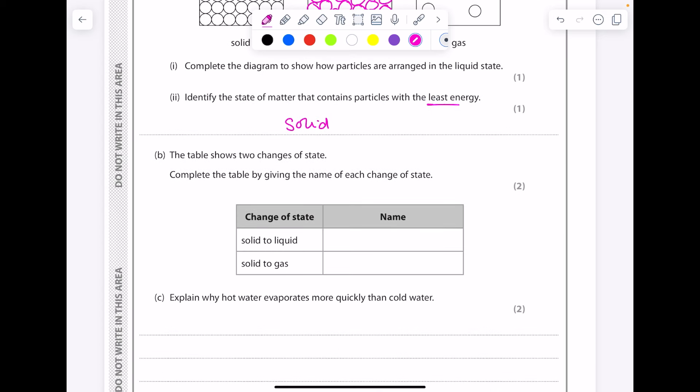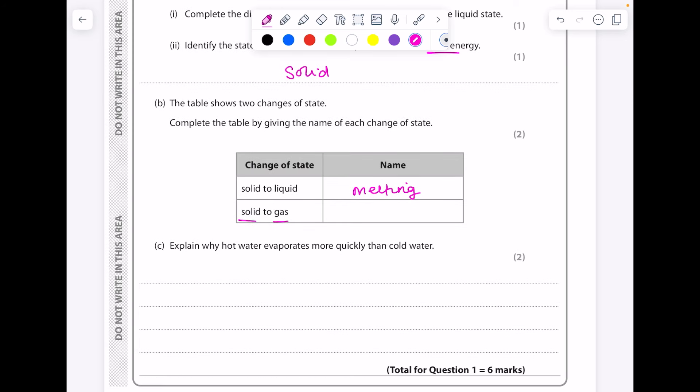The table shows two changes of state. Complete the table by giving the name of each change of state. Solid to liquid, remember, is melting. Solid to gas, so going straight through from solid to gas with no liquid state, so that's sublimation.